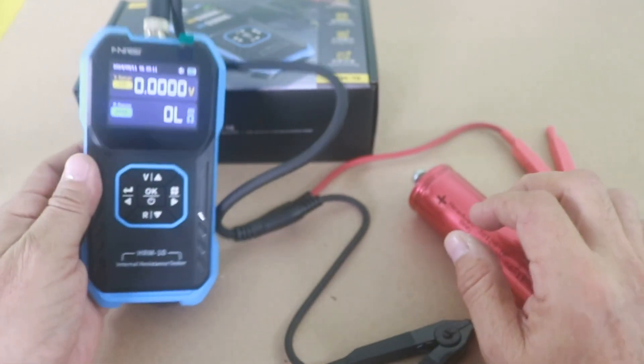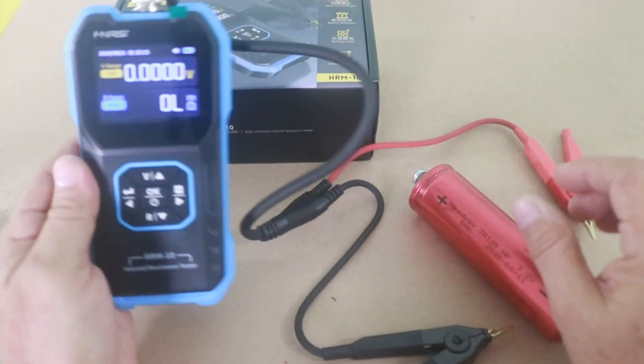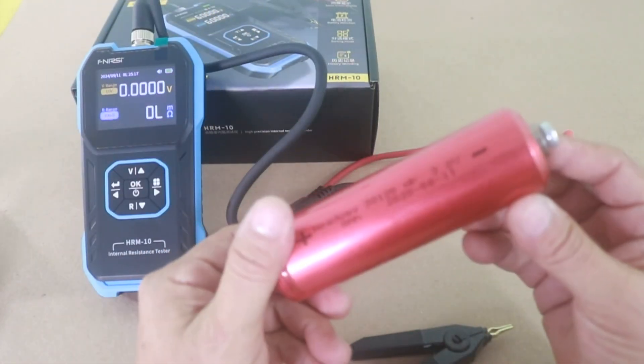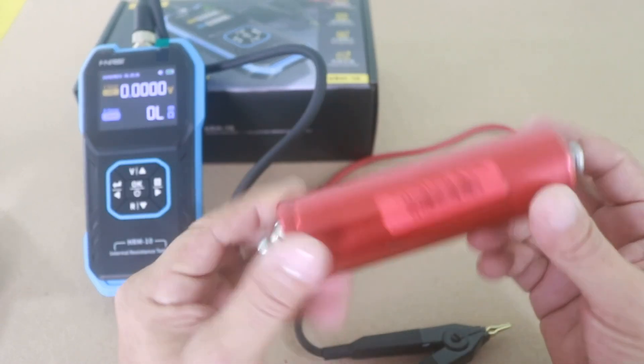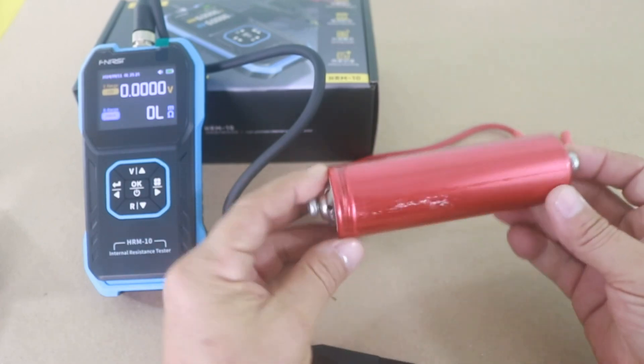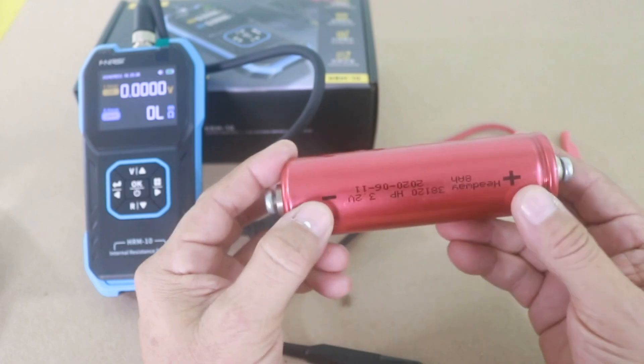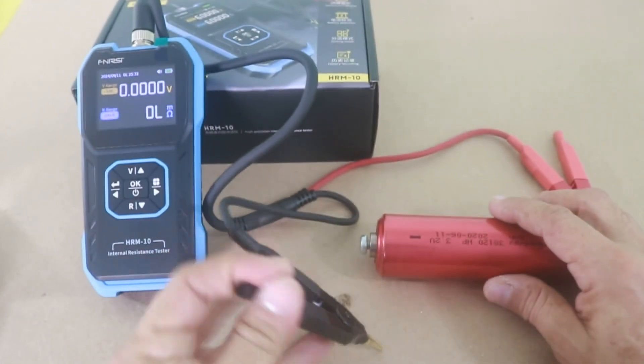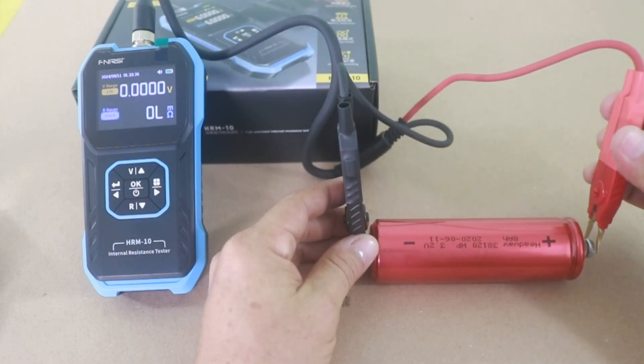For this I changed the range to 20 milliohms because this battery has very low internal resistance. So let's put the test leads. Let me check the polarity. This is positive. Okay. Negative and positive. And let's see. Here. And here.